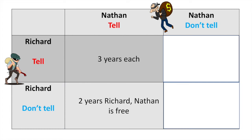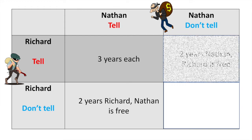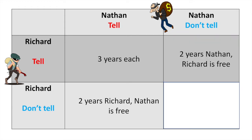Second, Richard hears the deal and thinks there's no way Nathan would tell, so he cannot bring himself to rat on his friend. However, he's wrong about Nathan and Nathan rats on Richard, resulting in a two year prison sentence for Richard. Third, Richard decides to tell on Nathan but Nathan refuses to tell on Richard. This results in a two year sentence for Nathan and Richard is free.